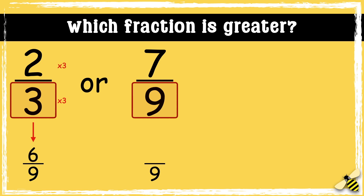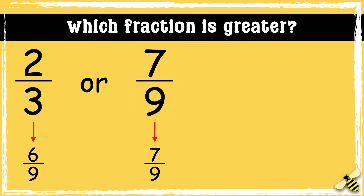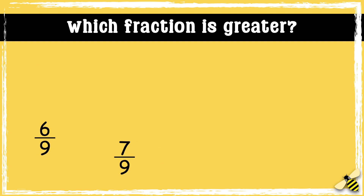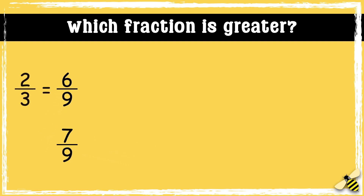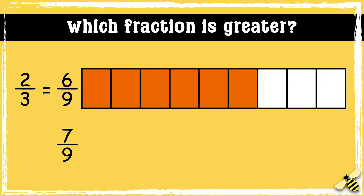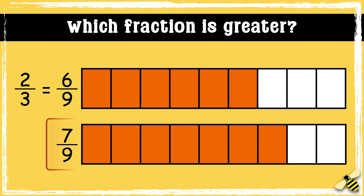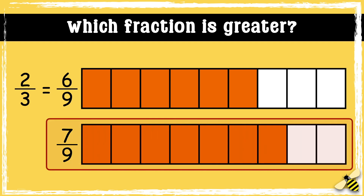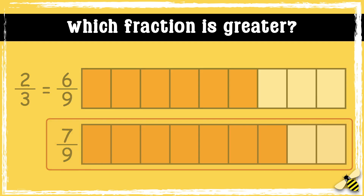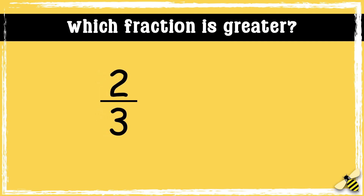So we also need to multiply the numerator by 3. 2 times 3 is 6. As the second fraction already has 9 as the denominator, it can stay the same. Now that the denominators are the same we can compare the fractions. Let's have a look side by side: 2 thirds or 6 ninths, and 7 ninths. We can see that 7 ninths is greater, so 2 thirds is less than 7 ninths.